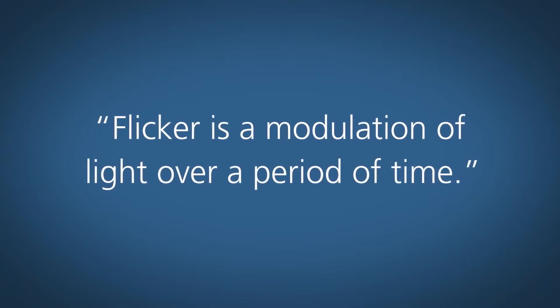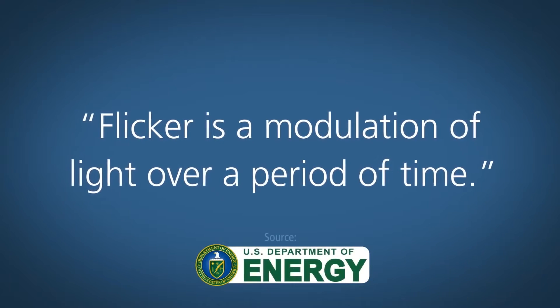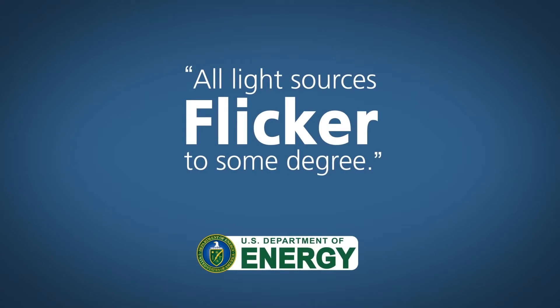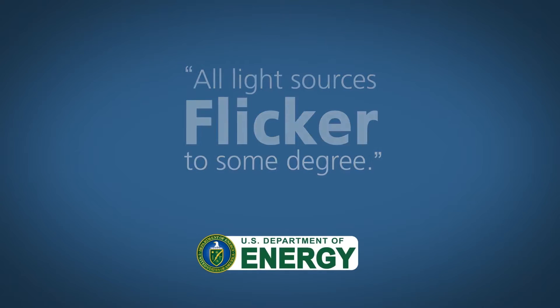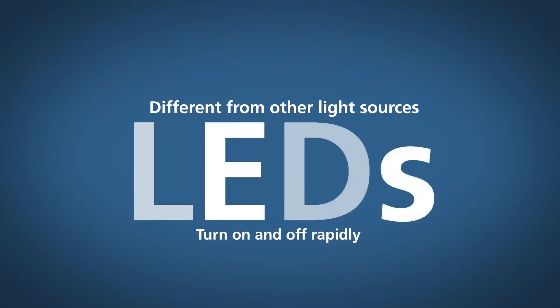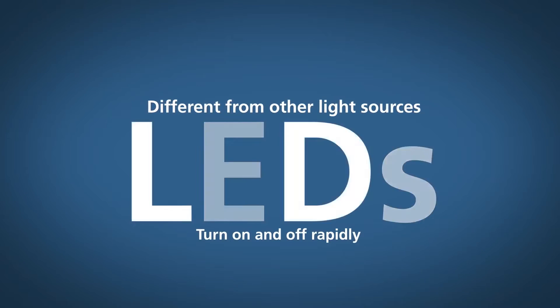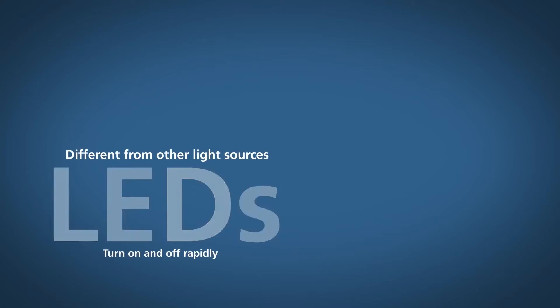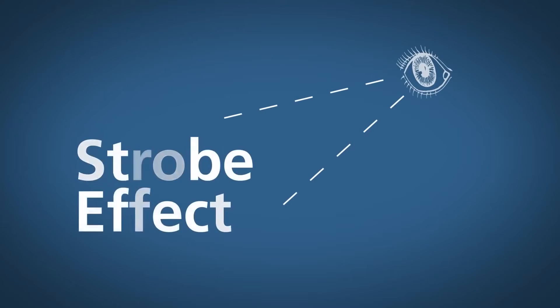What is the definition of flicker? The U.S. Department of Energy defines flicker as the modulation of light over a period of time, and also points out that all light sources exhibit some degree of flicker. Different than other light sources, LEDs turn on and off extremely rapidly. If this happens at a frequency you can perceive, you will have a strobe effect.